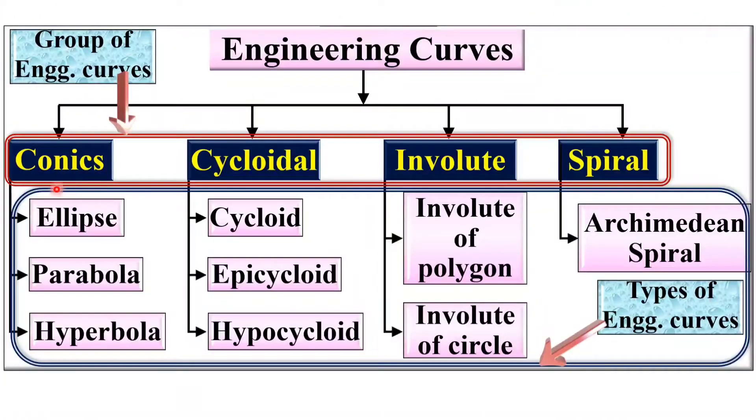In the last video we have discussed about the different engineering curves from the conics group, from the cycloidal group, from the involute group also. So now it's a little bit twist from this group, involute of a line. So far we have discussed about the involute of polygon and involute of circle but now it's for the involute of line.